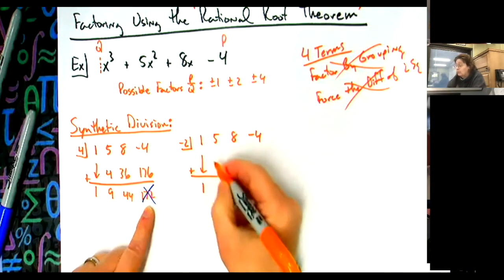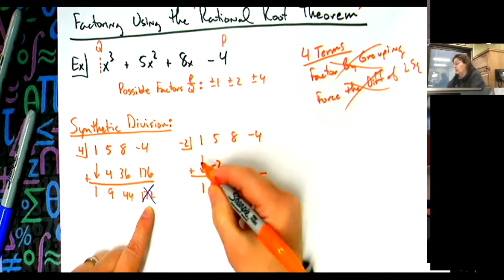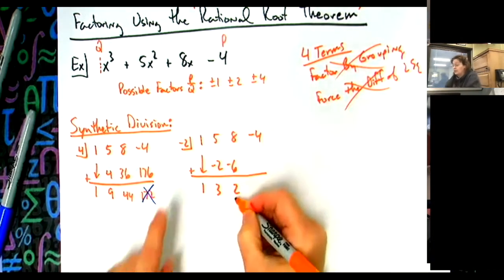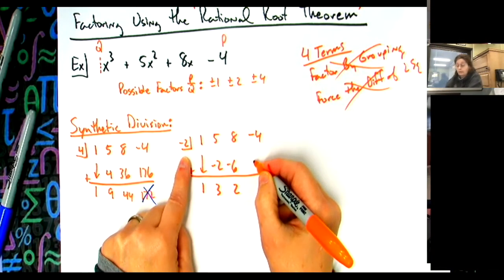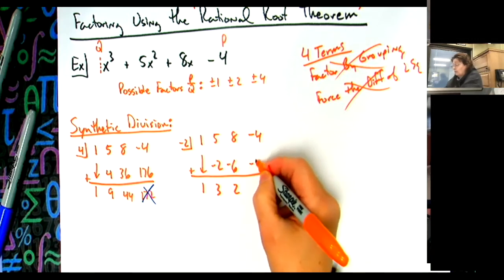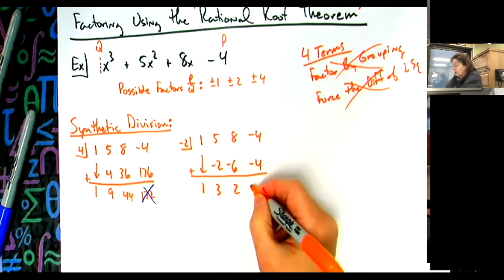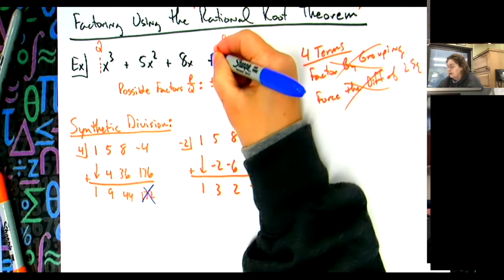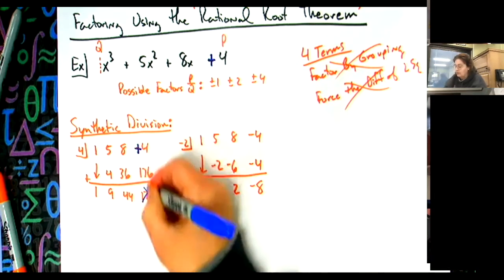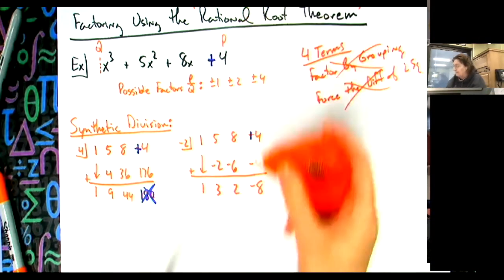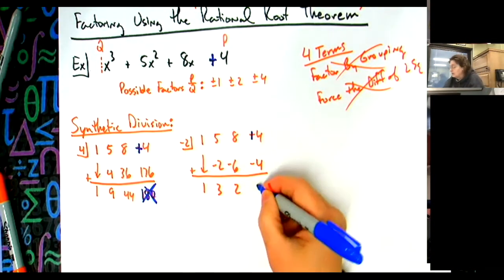I drop the one. One times negative two is negative two; negative two plus five is three; three times negative two is negative six; negative six plus eight is two; two times negative two is negative four. Checking: negative two, three, negative six, two — that gives negative eight, not zero. The reason this isn't working is because I copied the problem down wrong — it should be a plus sign, not a minus.